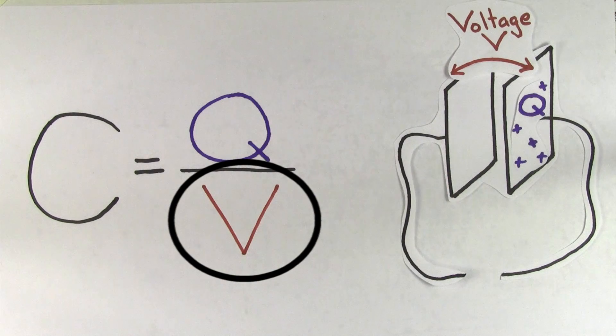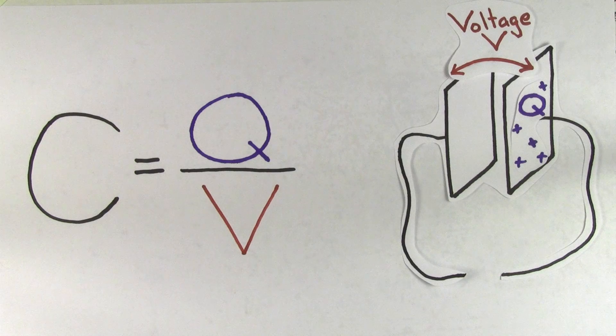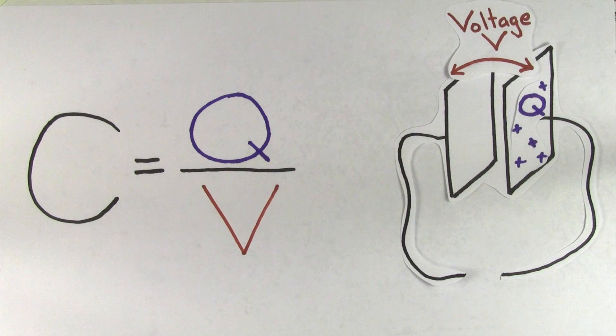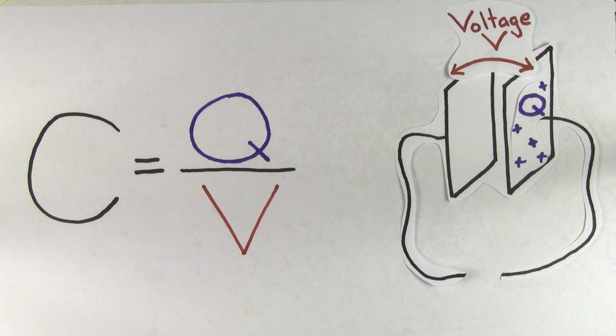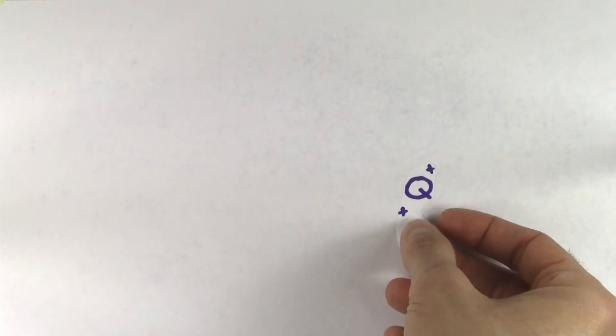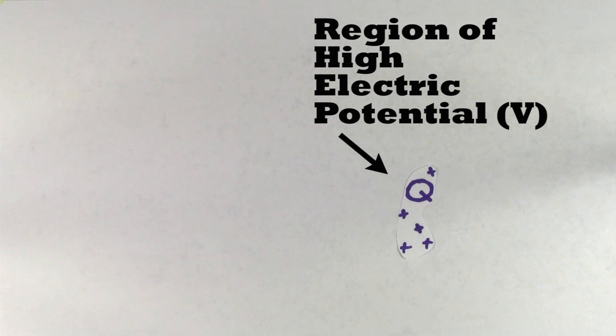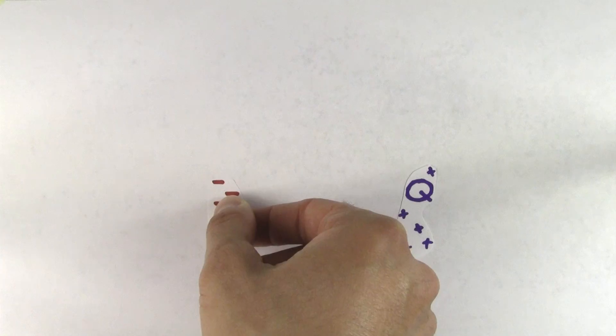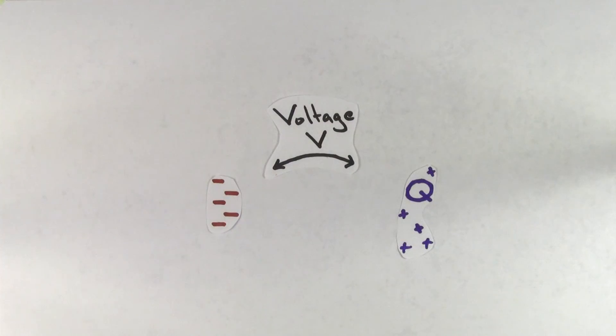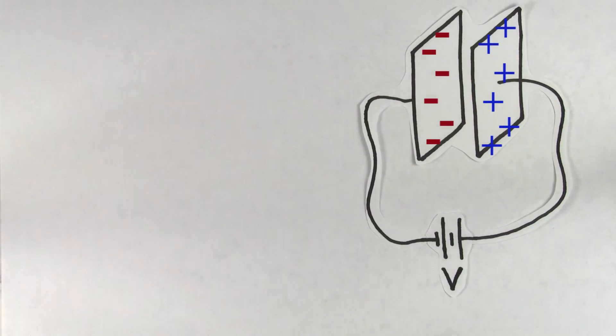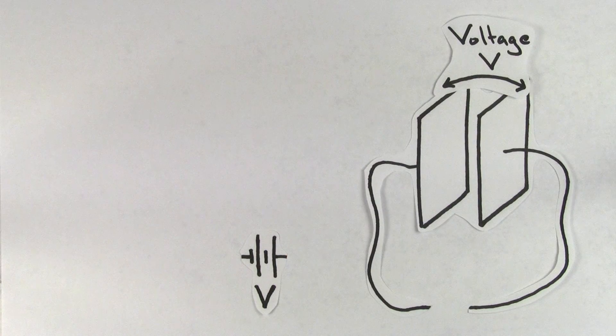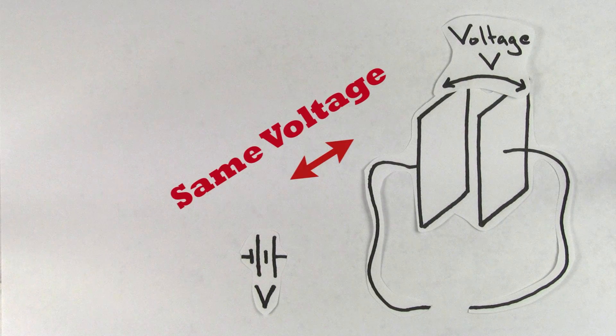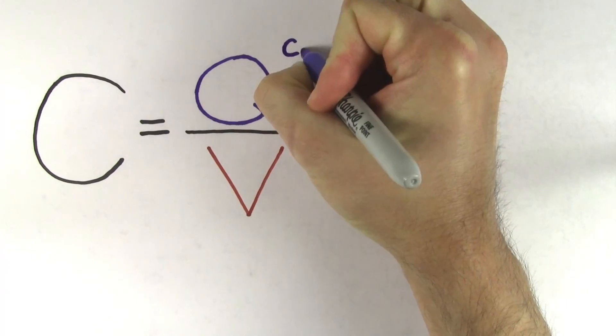What the voltage is referring to in this formula is the fact that when a capacitor stores charge, it will create a voltage or a difference in electric potential between the two pieces of metal. Electric potential is high near positive charges, and electric potential is low near negative charges. So if you ever have positive charges sitting next to but not on top of negative charges, there's going to be a difference in electric potential in that region, which we call a voltage. It's useful to know if you let a battery fully charge up a capacitor, then the voltage across that capacitor will be the same as the voltage of the battery.